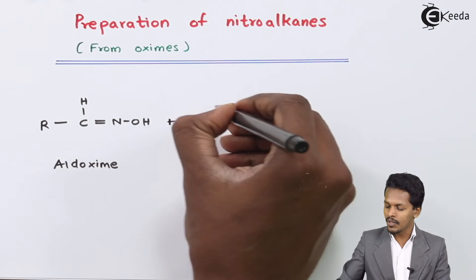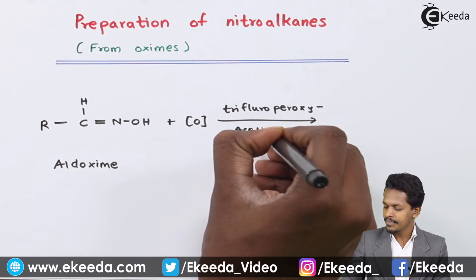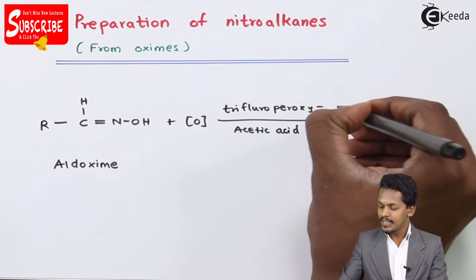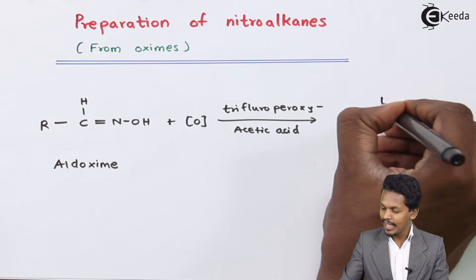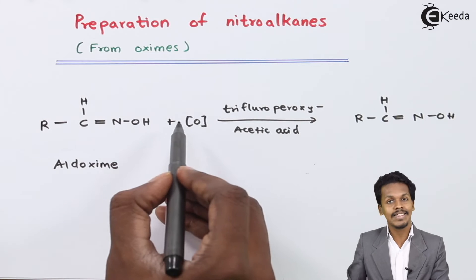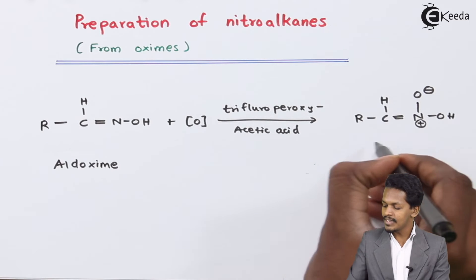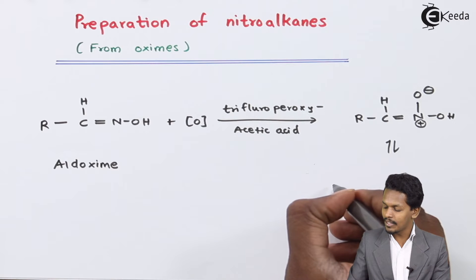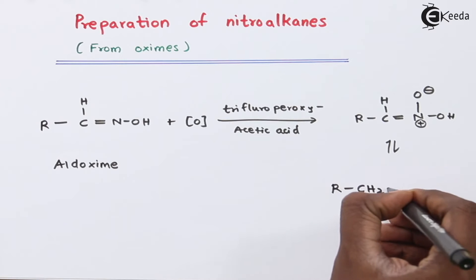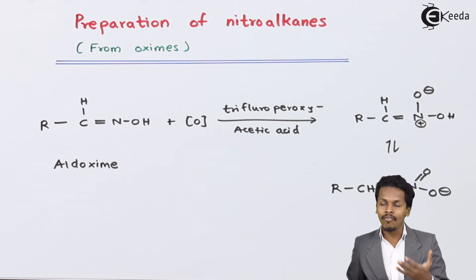Now suppose we treat the aldoxime with nascent oxygen, provided by trifluoroperoxyacetic acid. The oxygen will attack the nitrogen atom, forming an O⁻ charge on oxygen and a positive charge on nitrogen — giving a zwitterion intermediate. This unstable intermediate undergoes rearrangement: a hydrogen shifts to the carbon atom, giving R-CH₂-NO₂, which is a nitroalkane.